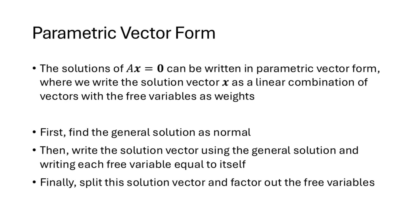So the solutions of Ax equals 0 can always be written in parametric vector form where we write the solution vector x as a linear combination of vectors where the free variables are the weights in that linear combination. The process is that first we find the general solution as we always have, but then we write the solution vector using the general solution and writing each free variable as being equal to itself, and then finally we split up that solution vector and factor out those free variables.